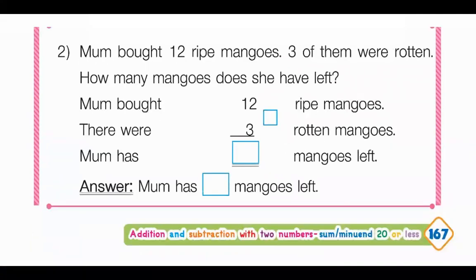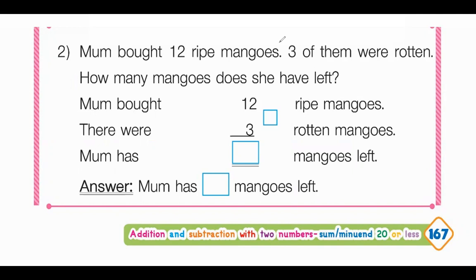Number 2: Mom bought 12 ripe mangoes. Three of them were rotten. How many mangoes does she have left? Mom bought 12 ripe mangoes, and there were 3 rotten mangoes, so we have to subtract 3. Then mom has 9 mangoes left.